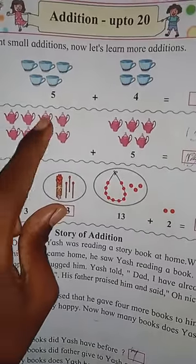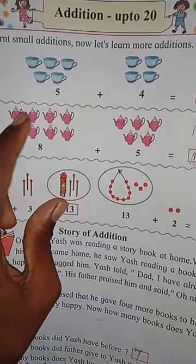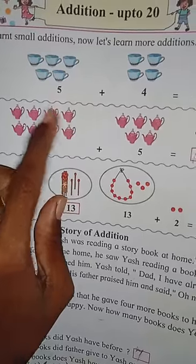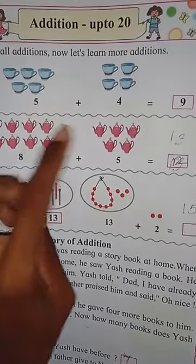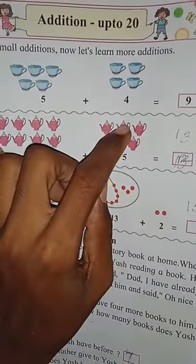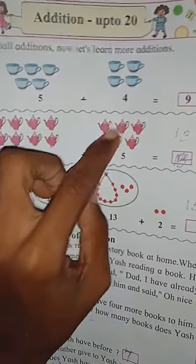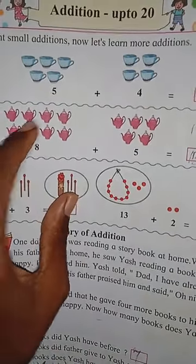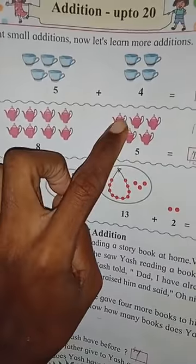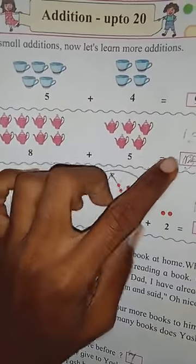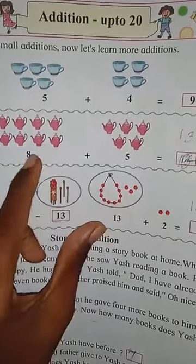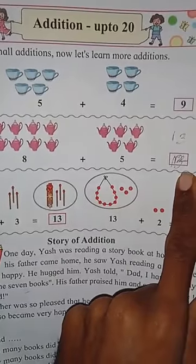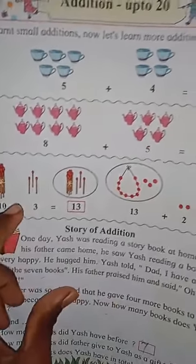See, in this way you're going to add this one also. How many teapots are there? One, two, three, four, five, six, seven, eight — eight teapots. Eight teapots plus five teapots — one, two, three, four, five — five teapots are there. So eight plus five: count it — eight, nine, ten, eleven, twelve, thirteen. Eight plus five is thirteen — that is one three, thirteen.